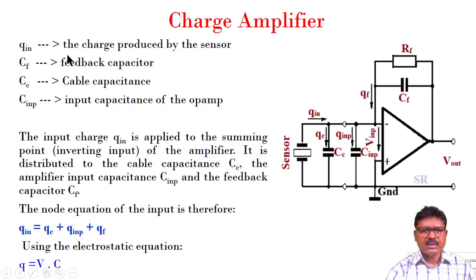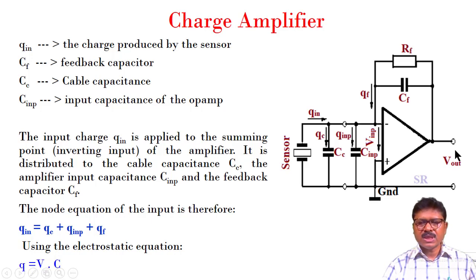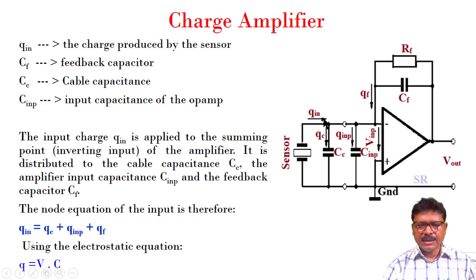QIN is the charge produced by the sensor. CF is the feedback capacitor. CC is the cable capacitance, and CINP is the input capacitance of the op-amp. To get the output, we use node calculation. At the node, the charge QIN flows in, while QC and QINP flow out through the cable capacitance and input capacitance respectively, and QF flows through the feedback capacitor. The KCL node equation gives: QIN + QF = QC + QINP, or equivalently QIN = QC + QINP − QF.